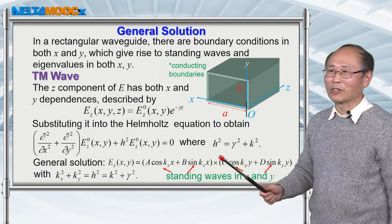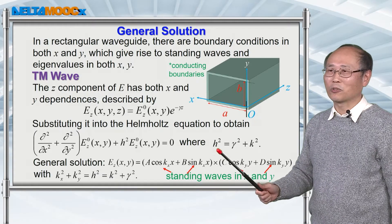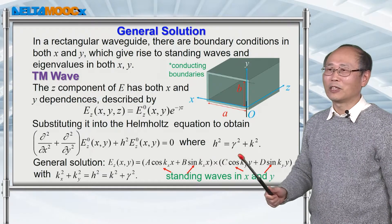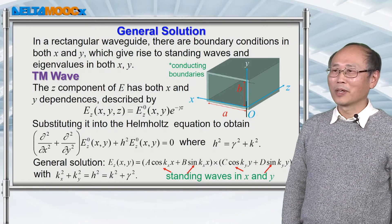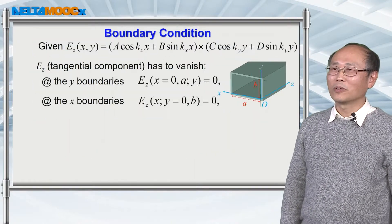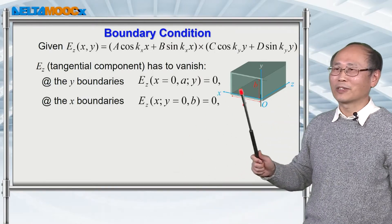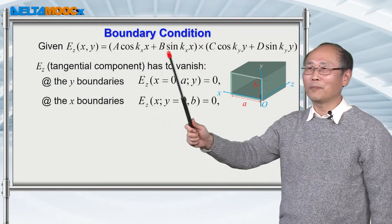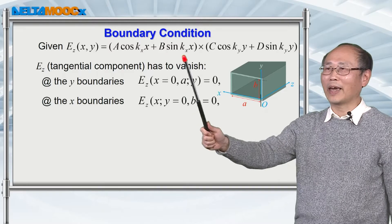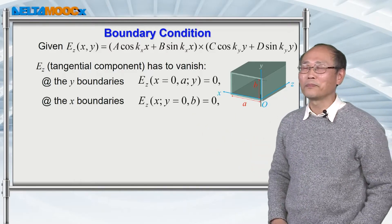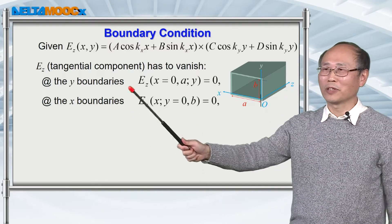You have to remember the relationship kx-squared plus ky-squared equals h-squared. Previously, you already know that the square of this eigenvalue is equal to gamma-squared plus k-squared. Now we need to impose boundary conditions to figure out what a, b, c, d, kx, and ky are. So let's look into the boundaries.